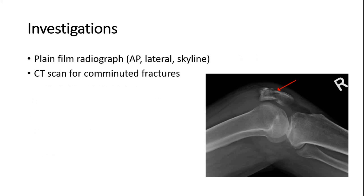For investigations, the mainstay of investigation for suspected patella fracture is plain film radiographs, obtaining three separate views: anteroposterior, lateral, and skyline views. CT scan can be done in comminuted fractures. This picture shows the lateral view of an X-ray of patella fracture.